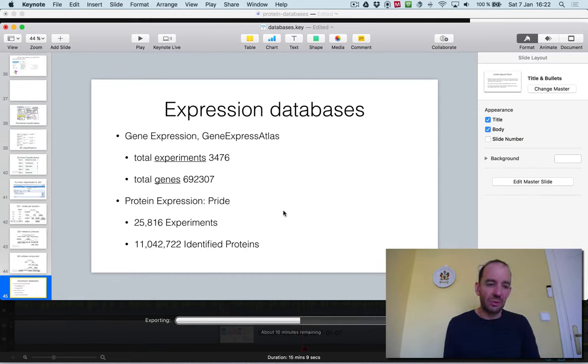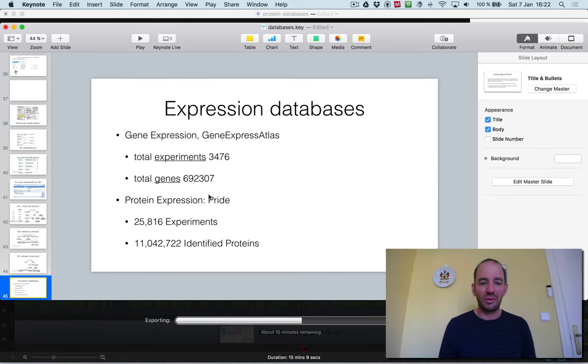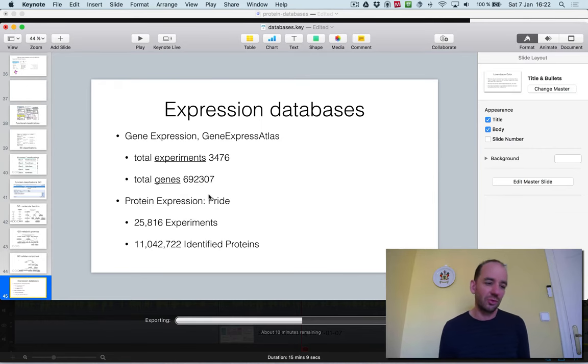Finally, there are also databases for where and when genes are expressed. For instance, Pride for protein expression, and Gene Expression Atlas for gene expression. This is very important because if proteins are not expressed, they have no function. Many genes are only expressed at certain times in a cell's history.